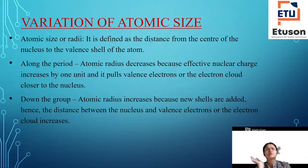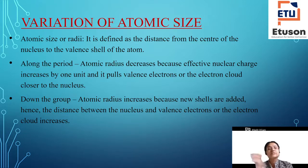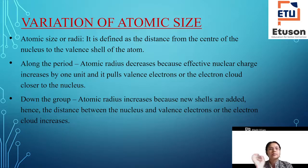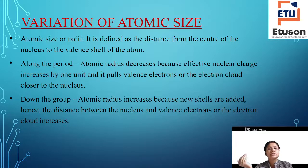Next, variation of atomic size. Atomic size or radius is defined as the distance from the center of the nucleus to the valence shell of the atom. Along the period, atomic radius decreases, because effective nuclear charge increases by one unit and it pulls the valence electrons and the electron cloud closer to the nucleus.